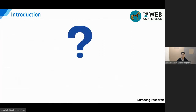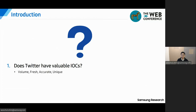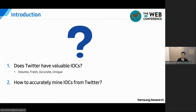So we have reached these two research questions. The first one is: does Twitter have valuable IOCs? The examples of value are how many IOCs are on Twitter, how fresh they are, how accurate they are, how unique they are. To our best knowledge, we are the first group to examine the characteristics of IOCs on Twitter. Another question is: how to accurately mine IOCs from Twitter? Since Twitter is not designed for threat intelligence and existing systems that gather IOCs from Twitter show low accuracy, we need a new method to mine IOCs from Twitter accurately.